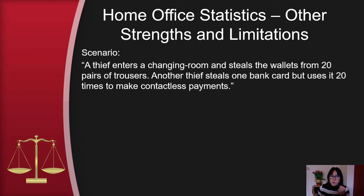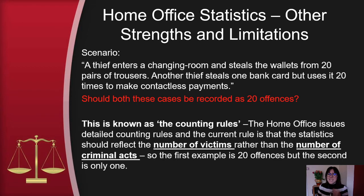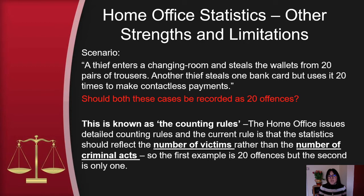Other strengths and limitations: consider this example. A thief enters a changing room and steals wallets from 20 pairs of trousers. Another thief steals one bank card but uses it 20 times to make contactless payments. Should both of these crimes be recorded as 20 offences, or one offence each? This is known as the counting rules. The Home Office issues detailed counting rules, and the current rule is that the statistics should reflect the number of victims rather than the number of criminal acts. So the first example counts as 20 offences, but the second is only one.